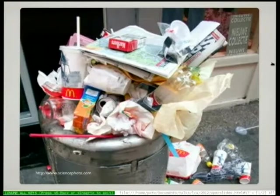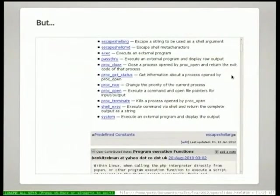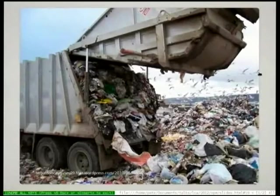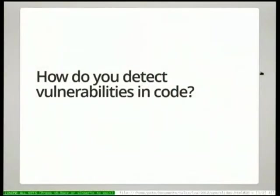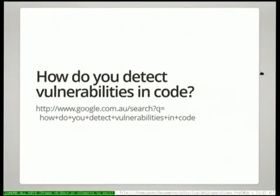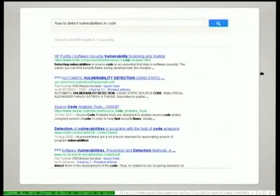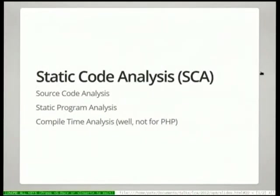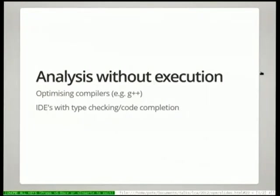It's even worse when you look at all the different ways that PHP can execute functions on the shell — so instead of a big pile of rubbish, you get a huge pile of rubbish. I don't like looking at it. So I was thinking, how do I go about detecting vulnerabilities in code? I asked myself, and found the answer with a famous web search engine. Static code analysis is something you've probably come across before if you've used an optimising compiler or even a text editor that does syntax highlighting — it's looking at your code without executing it and trying to find out what different parts mean.